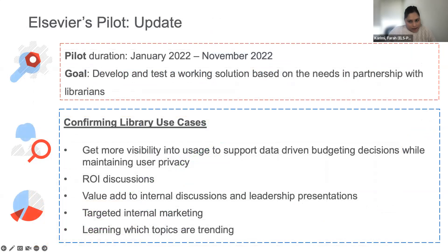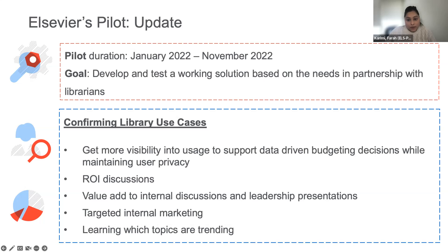In order to validate our thinking, we ran a pilot starting earlier this year, working closely with librarians as our development partners. We wanted to test the technical solution based on the findings from our discovery phase. Their insights were critical to shaping the solution and validating our outcomes. We were able to successfully test the technical workings and that the solution is fit for purpose for library use cases. The primary driver for this remains the ability to support budgeting decisions by getting more visibility into usage without compromising user privacy.